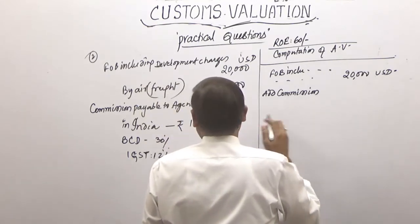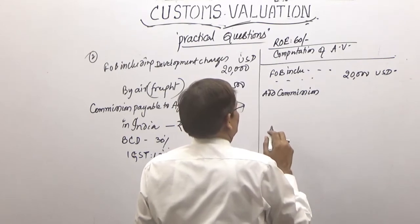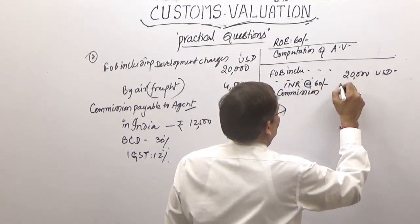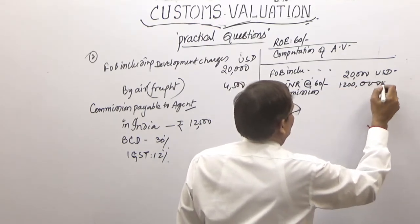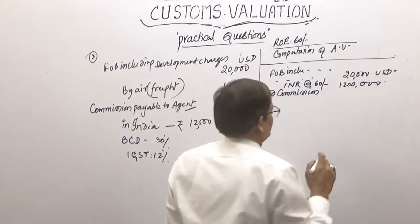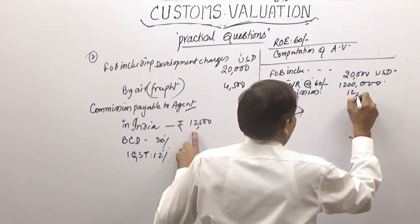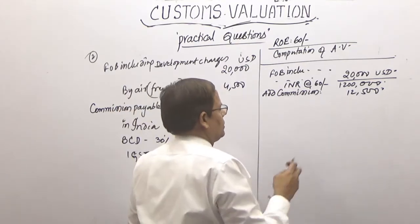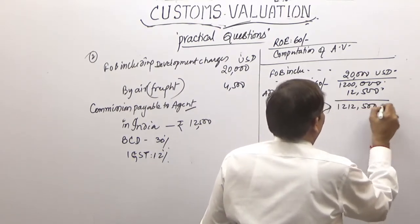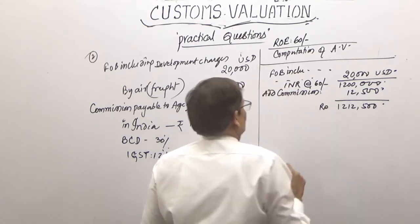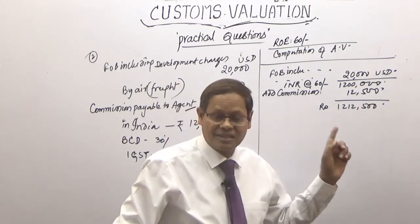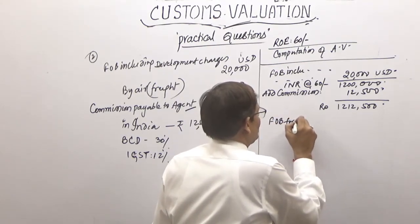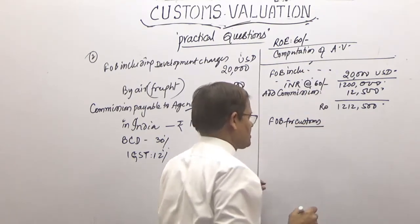Since the commission is in Indian rupees, I convert the FOB to Indian rupees first: $20,000 × 66 = ₹12,00,000. Then add commission in Indian rupees: ₹12,500. Total is ₹12,12,500. This is the FOB for the purpose of customs.